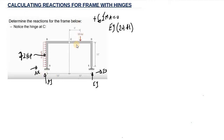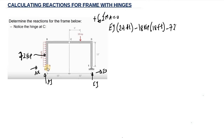Now we have 18 kip acting downward. Relative to point A, it is going to try to rotate the frame in the clockwise direction, so it is negative. That is negative 18 kip, multiplied by the distance of 6 feet plus 12 feet, giving 18 feet. Then we have 72 kip. Relative to point A, it also tries to rotate the frame clockwise, so this is negative 72 kip multiplied by the distance, which is half of 12 feet, giving 6 feet.